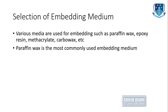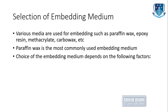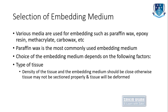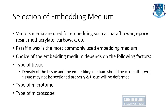The most commonly used embedding medium is paraffin wax. The choice of embedding medium depends on different factors: one is the type of tissue, because the density of the tissue and the embedding medium should have no difference — otherwise the tissue may not be sectioned properly and will be deformed. It also depends on the type of microtome used, whether manual or automated, the size of sectioning, and the type of microscopy — whether light microscopy or electron microscopy.